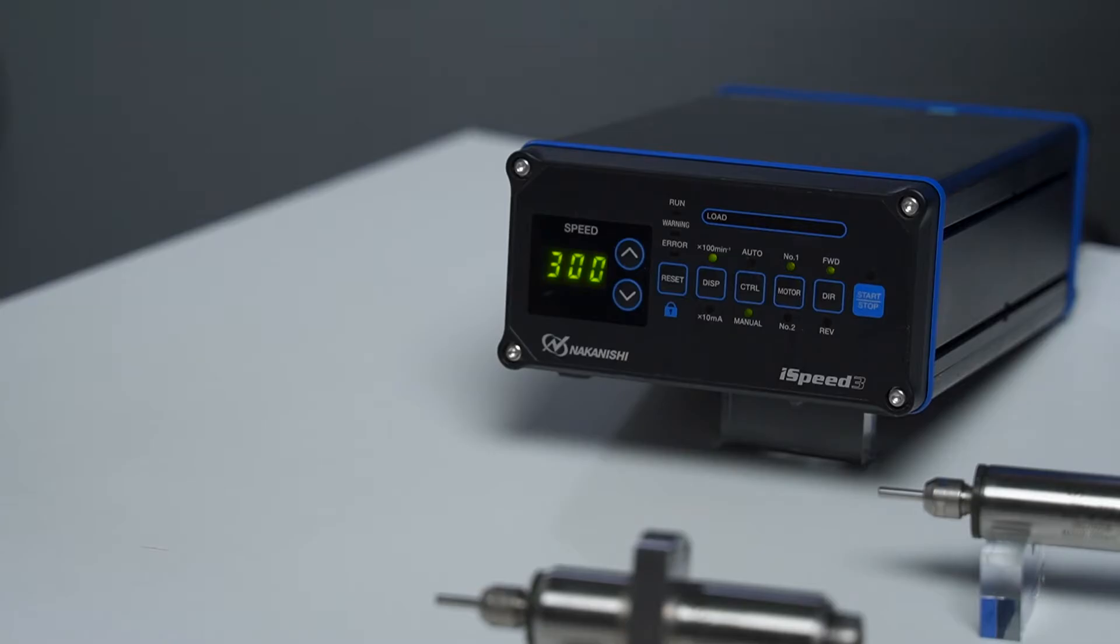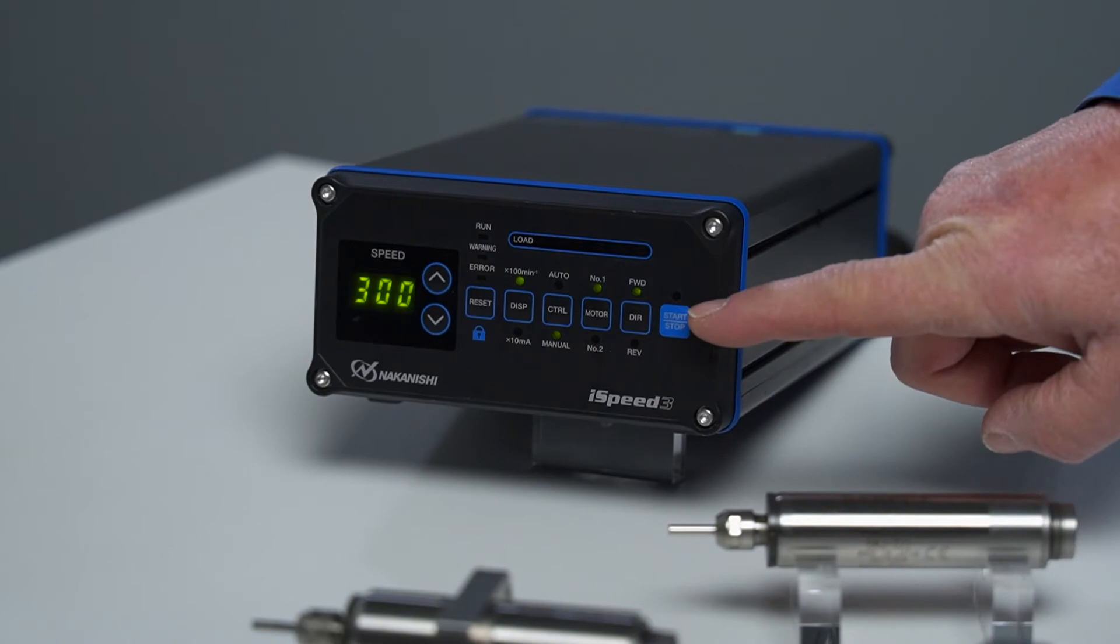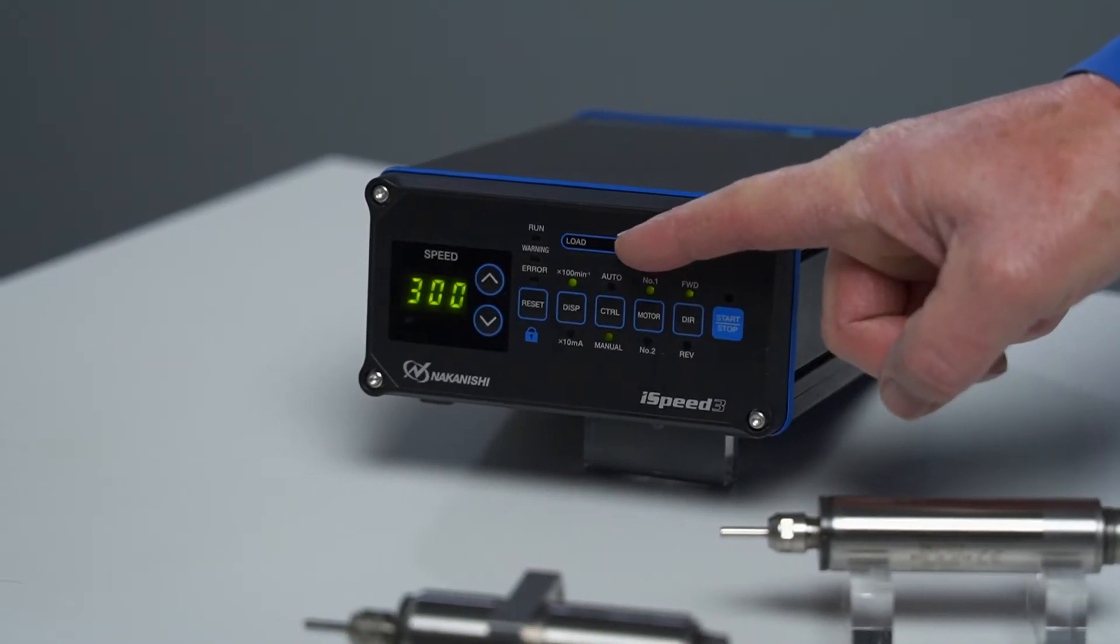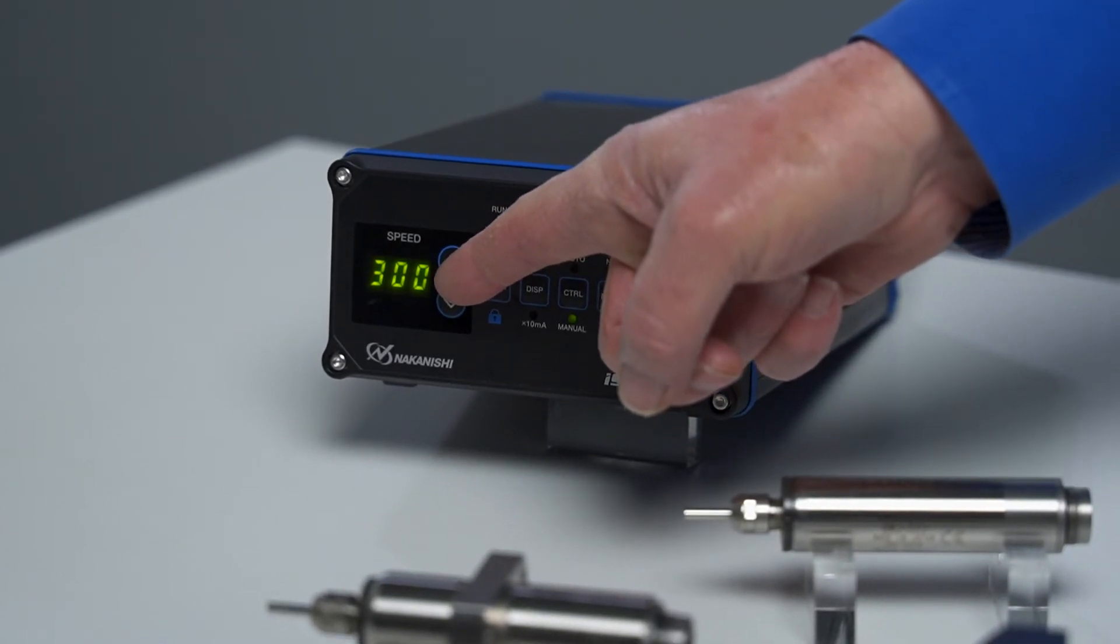The control unit is interfaceable to the machine's control unit with 24-volt inputs and outputs. It has a variety of I/O functions, including a built-in load meter. Speed is adjustable in 100 RPM increments.